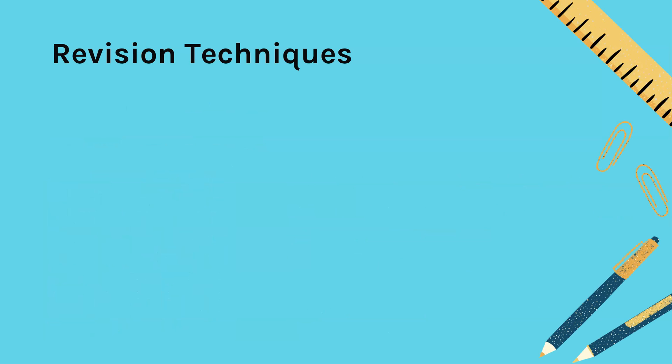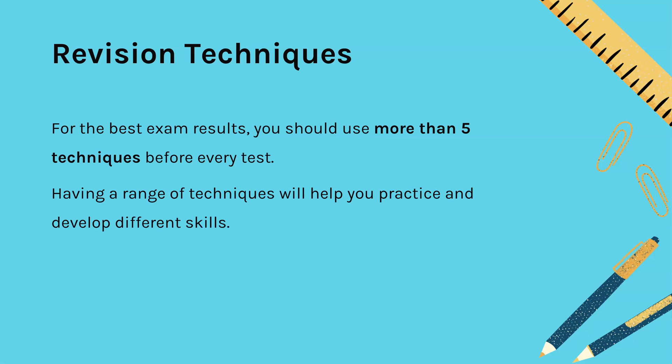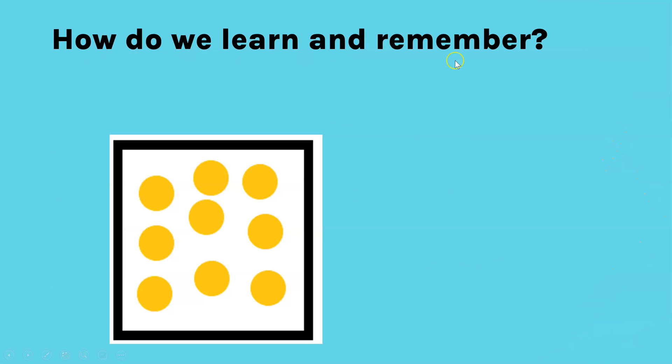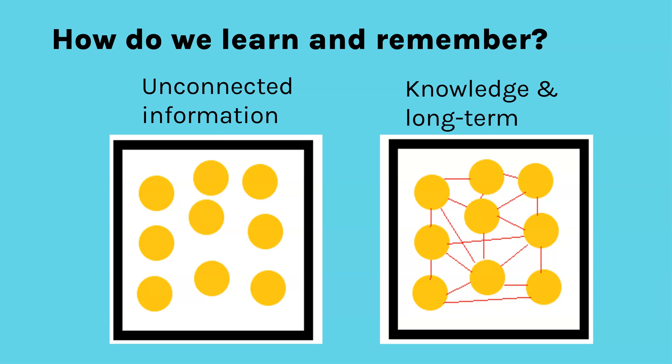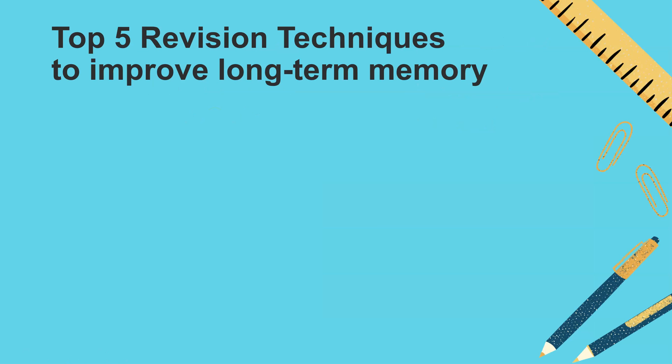So if we link that to concept maps and revision techniques, ideally you should be doing at least five different techniques before every test and that's because it will test a range of different skills and it will help to connect lots of different pathways. When you first learn the information, you just have lots of disconnected facts in your brain that you're told in the lesson and that's unconnected information.